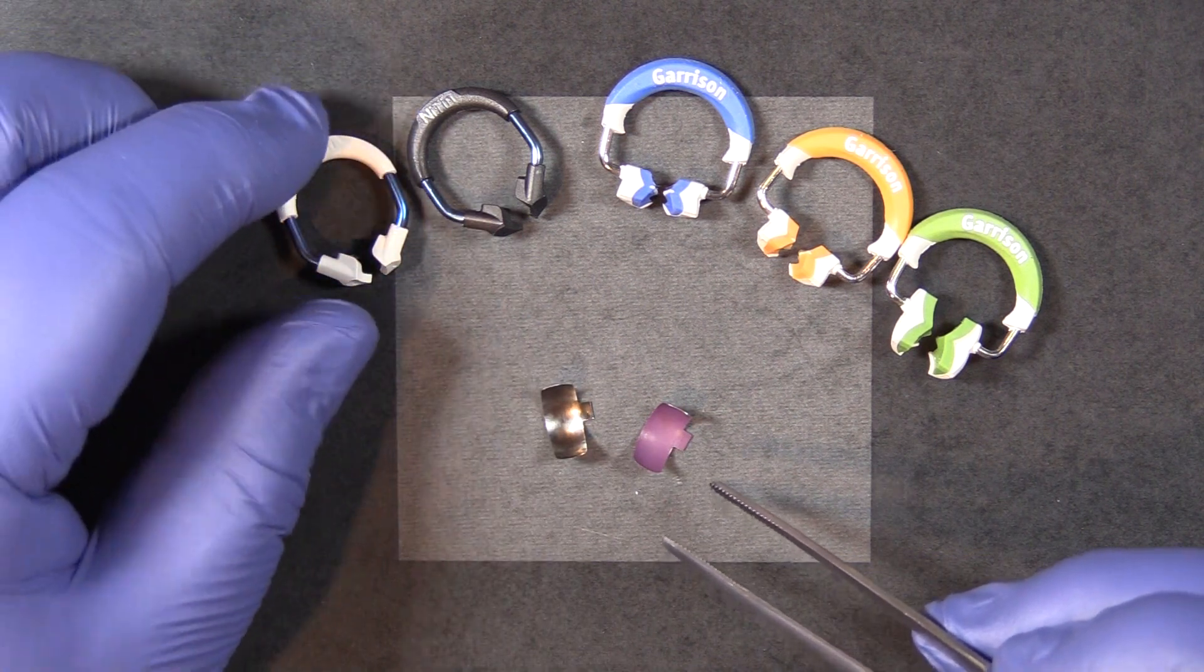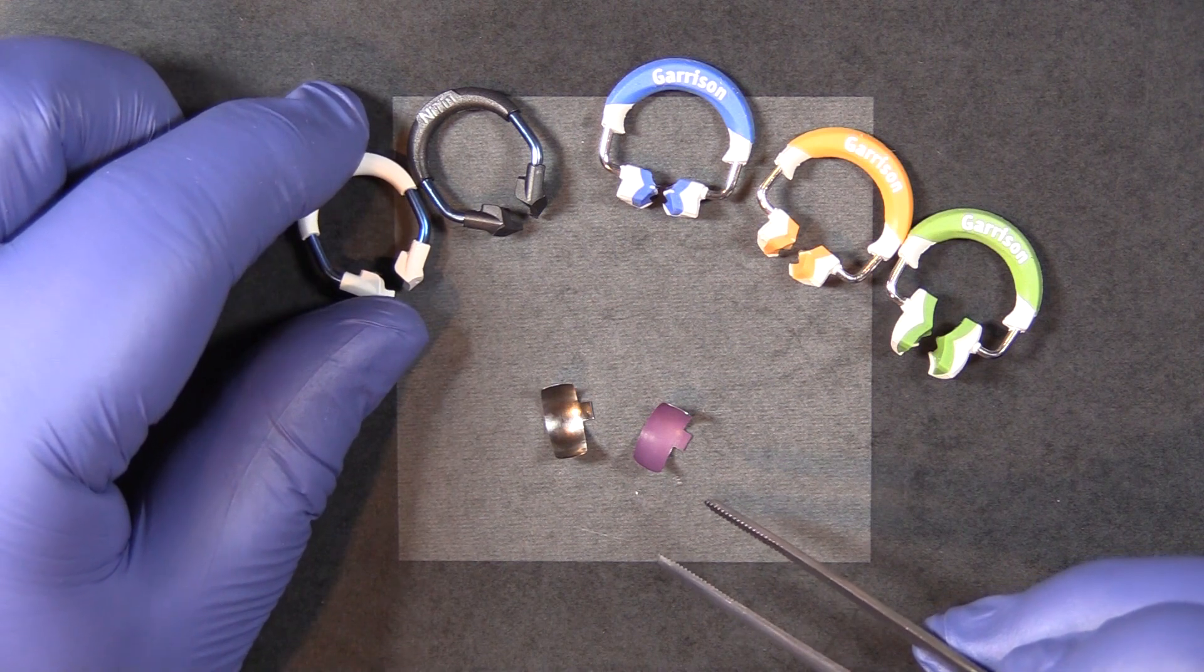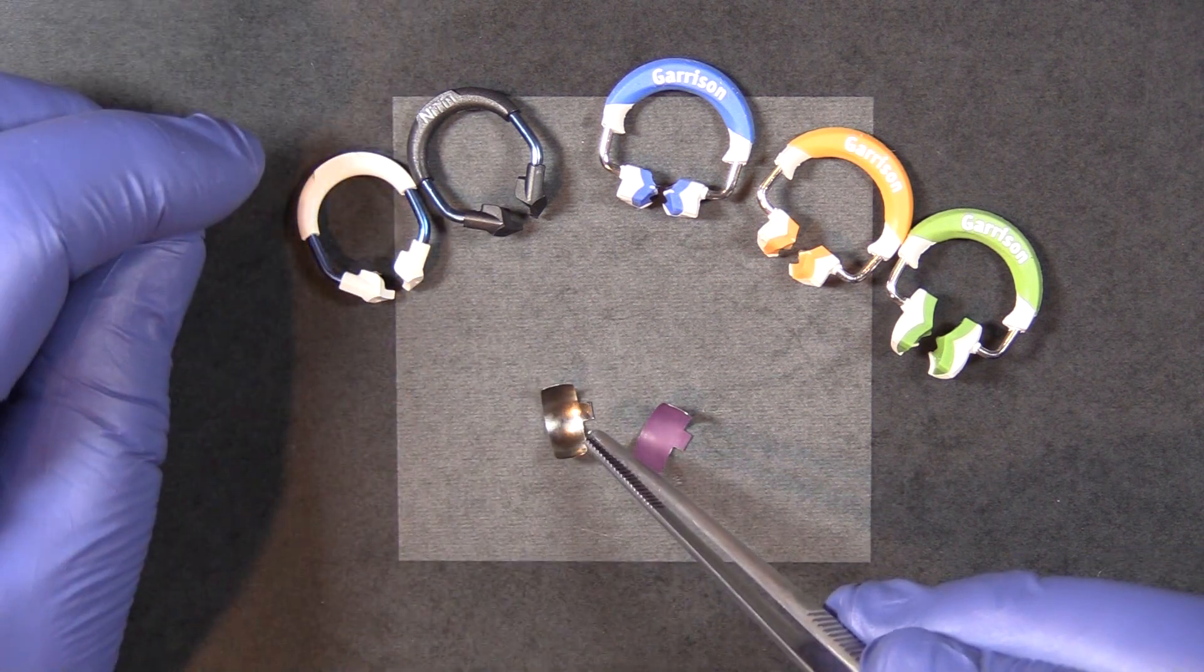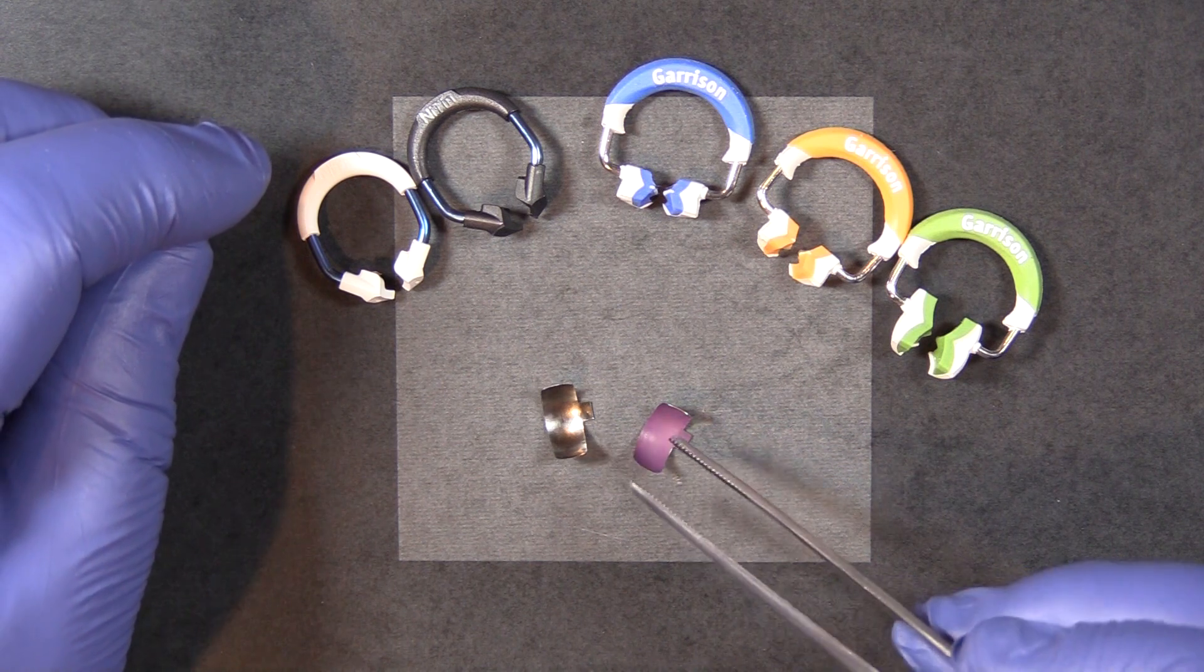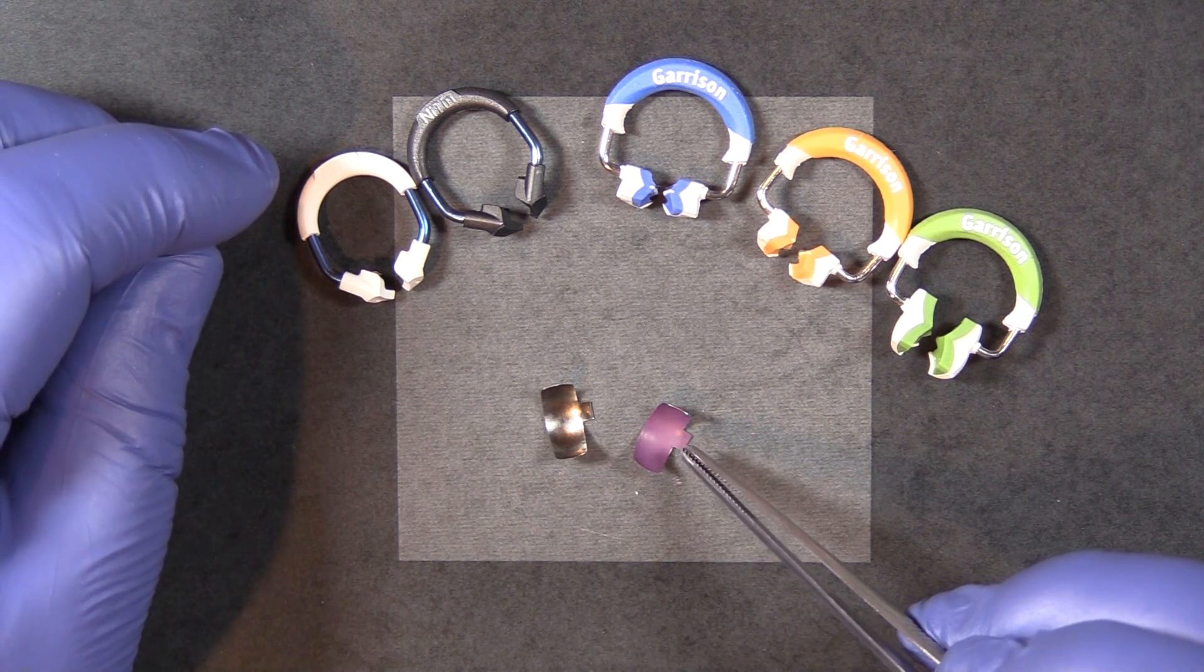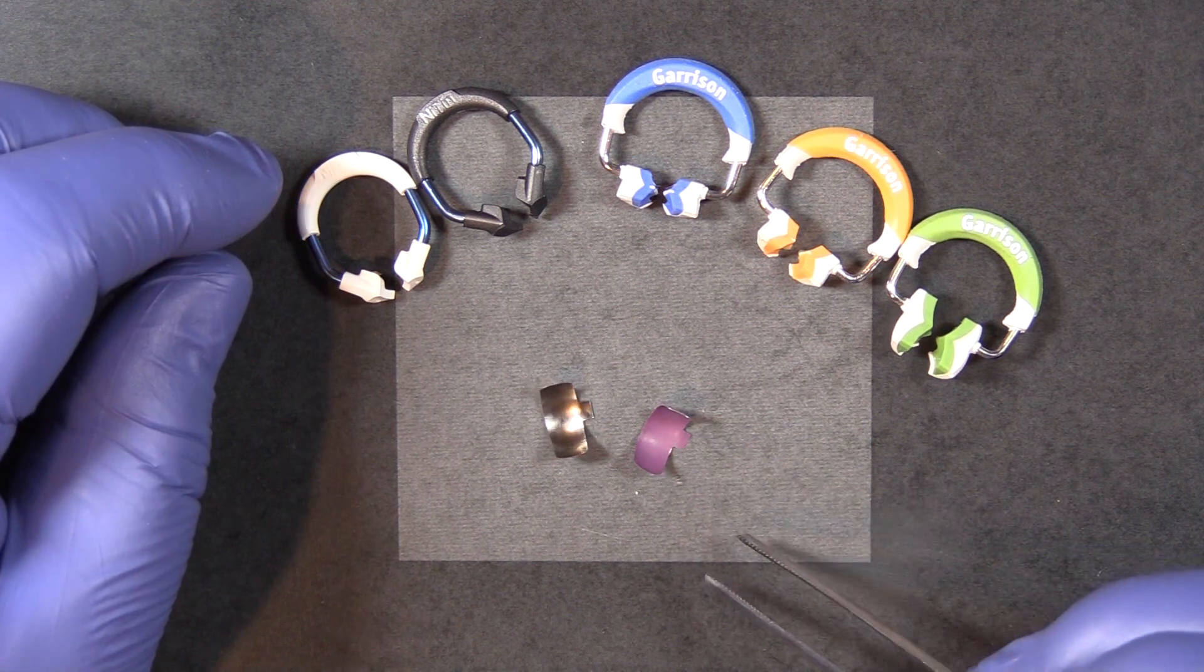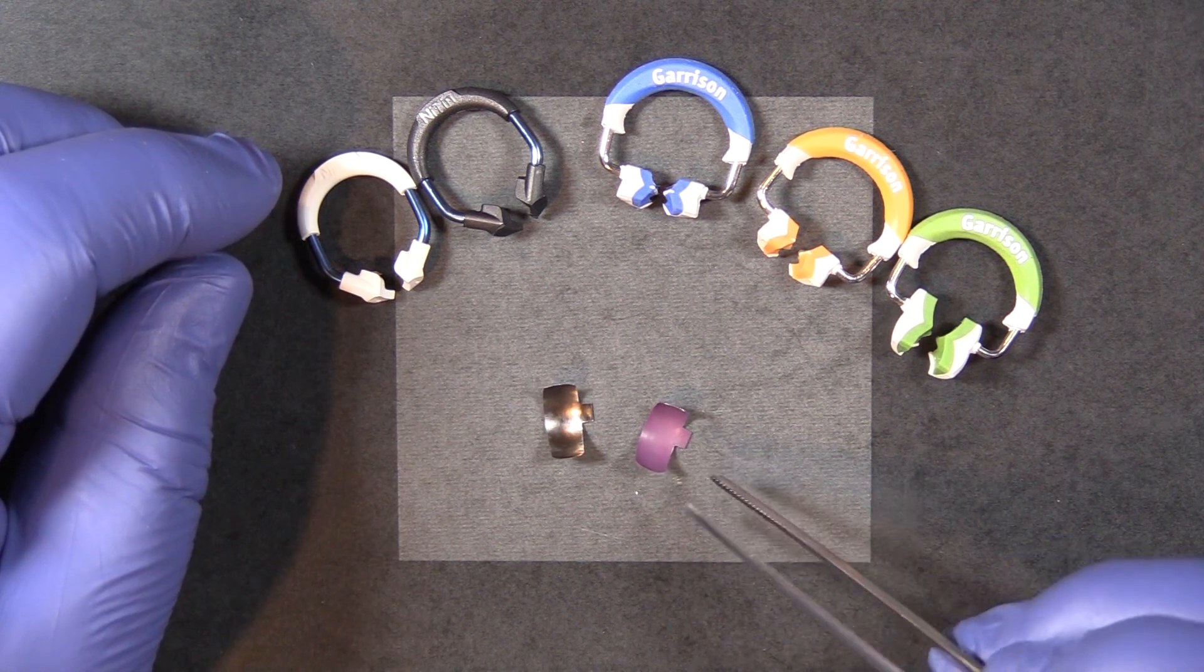If you do not have an issue with your particular brand of bonding agent adhering to the metal, then the Nitin bands are not going to pose any issue for you. If you're using a type of bonding agent that does aggressively bond to metal, then the Fusion bands will prevent gluing the band in the approximal.